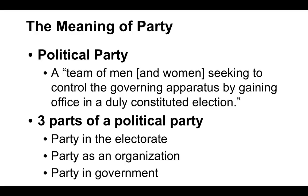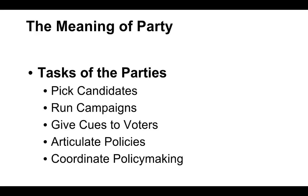Parties have jobs. The first and foremost job of a party is to pick candidates for elections. They're going to run the campaigns for those candidates. They give cues to the voters — what's an important topic, what we should vote for. They articulate policies: what does the Democratic Party stand for, what does the Republican Party stand for. They coordinate policymaking, helping parties figure out what policies they are for and what they are against. That's what the apparatus of parties do.